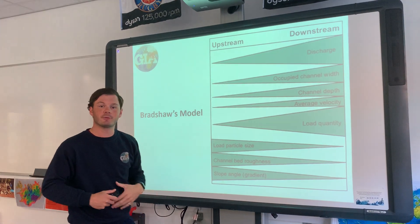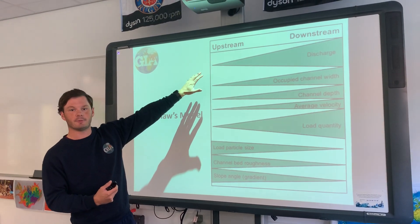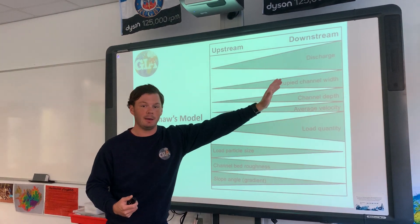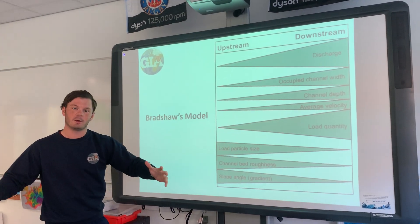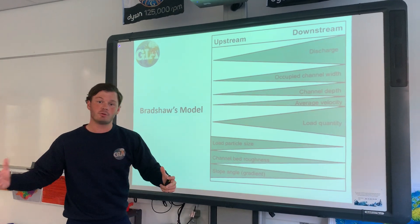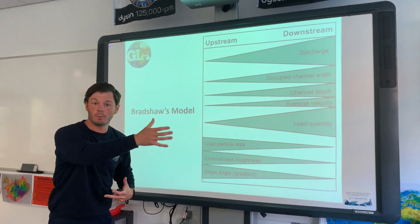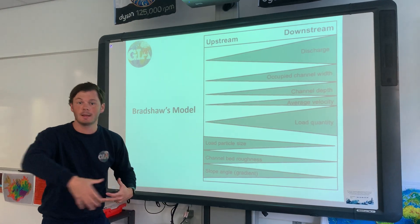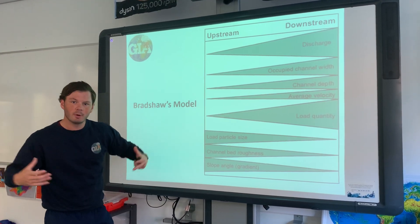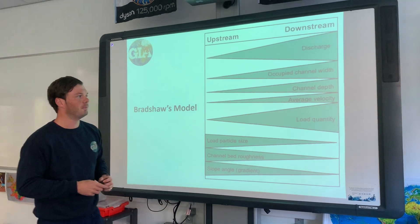The discharge — the amount of water flowing through a river — there isn't that much at the start of the river. And as you make your way through the middle and lower course, the discharge increases. This is because you've got tributaries joining up other rivers, like the Avon that we'll see joining up in Tewkesbury. All these rivers join up so there's more water flowing through the river at a given point.